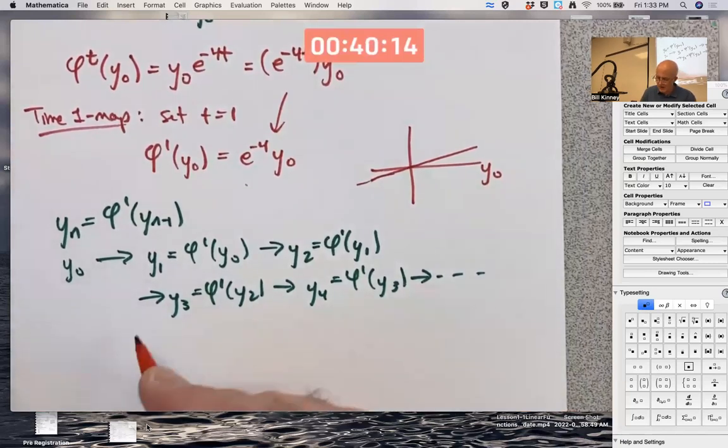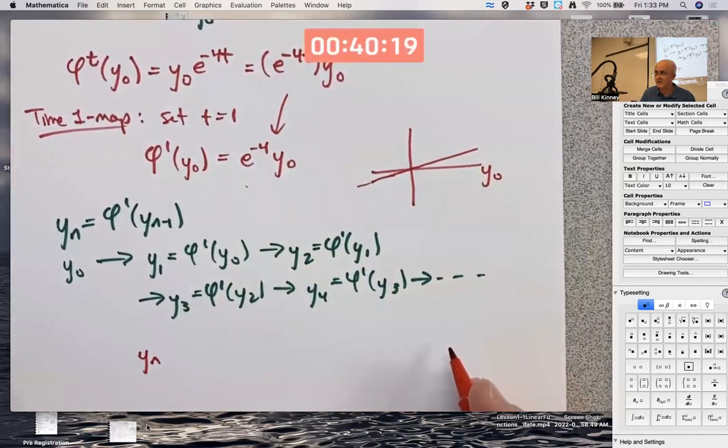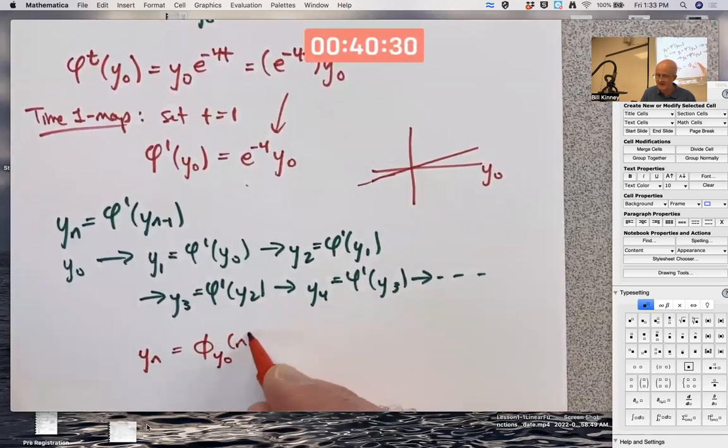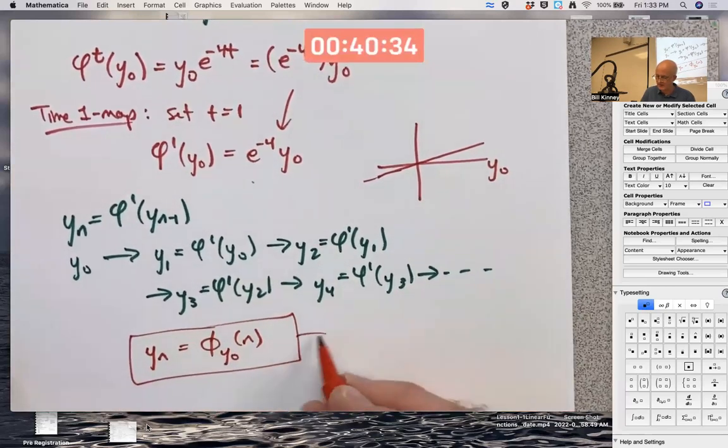And that is that the value of y_n that you get by iterating this function, this linear function, is the same as the solution of the differential equation at time n. That's the key relationship right there.